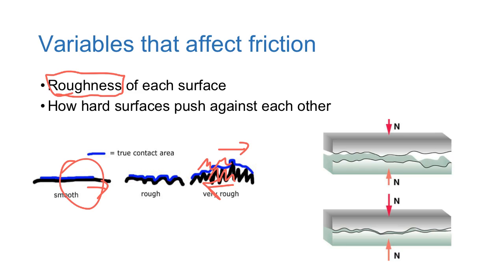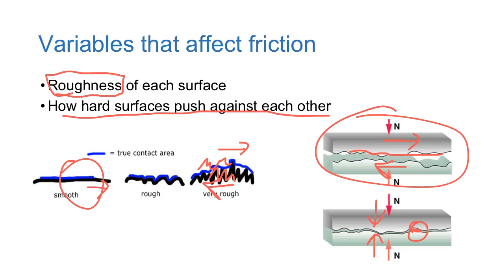The next one is how hard surfaces push against each other. In this situation right here, these two objects are just kind of grazing the surface, it's a little bit easier for one surface to pass by the other surface. Whereas if they're being pushed against each other with more force, then there's more likely for these grooves to kind of get caught - you can see right here the grooves are going to get caught with each other the harder you push down on this.